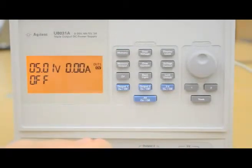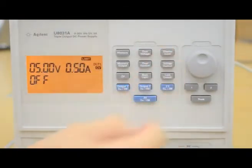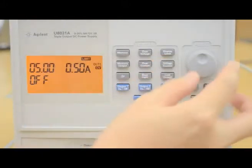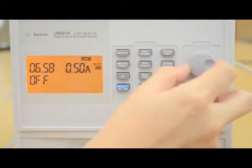Now I will set the second output level to 7.2 volts. Repeat the same steps. Press Display Limit. Turn the knob until it reaches 7.2 volts. I will leave the current limit as it is.